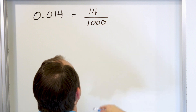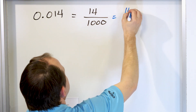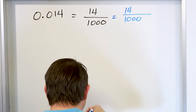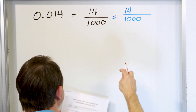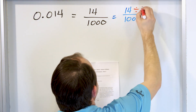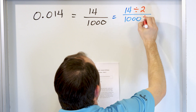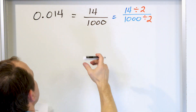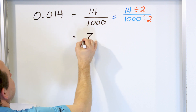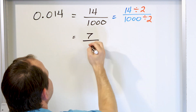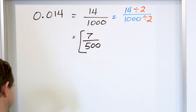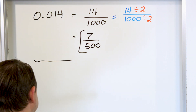So how do we simplify 14 out of 1,000? We can divide top and bottom by 2. 14 divided by 2 is 7, and 1,000 divided by 2 is 500. The answer is 7 five-hundredths, and that's the final answer.